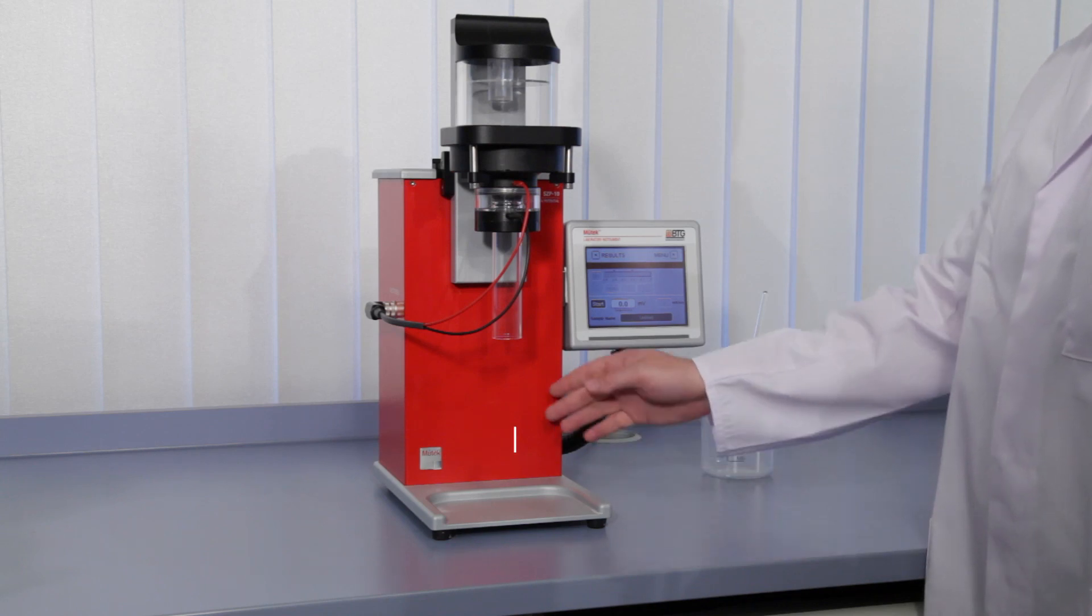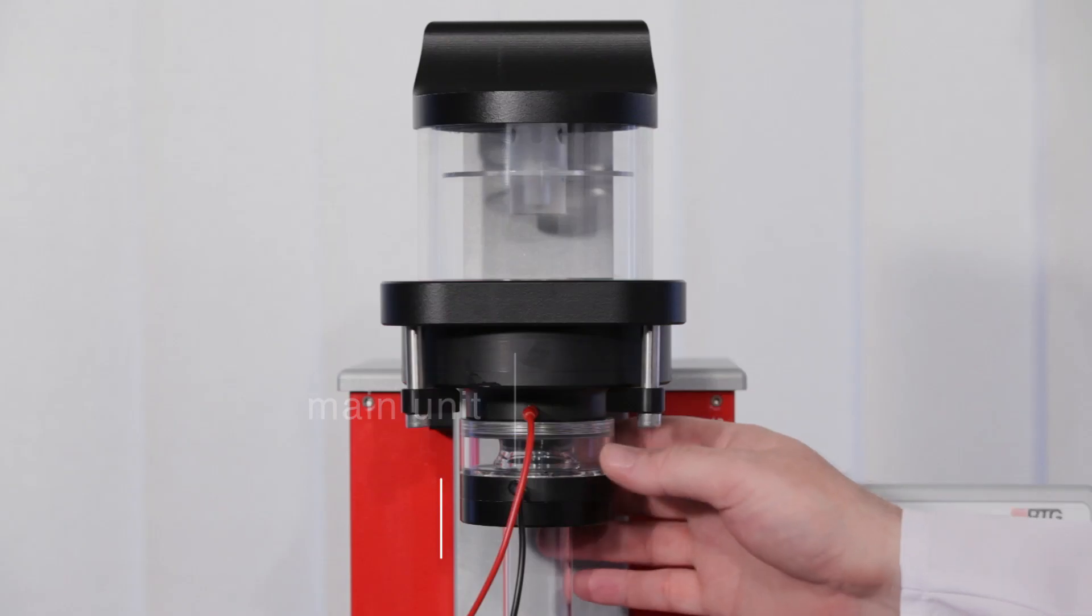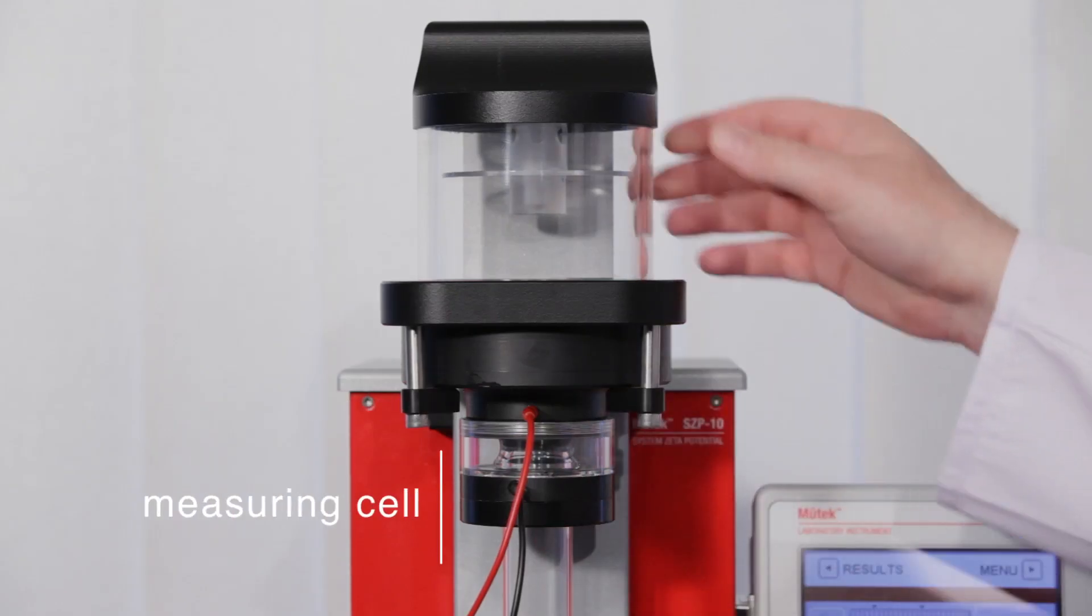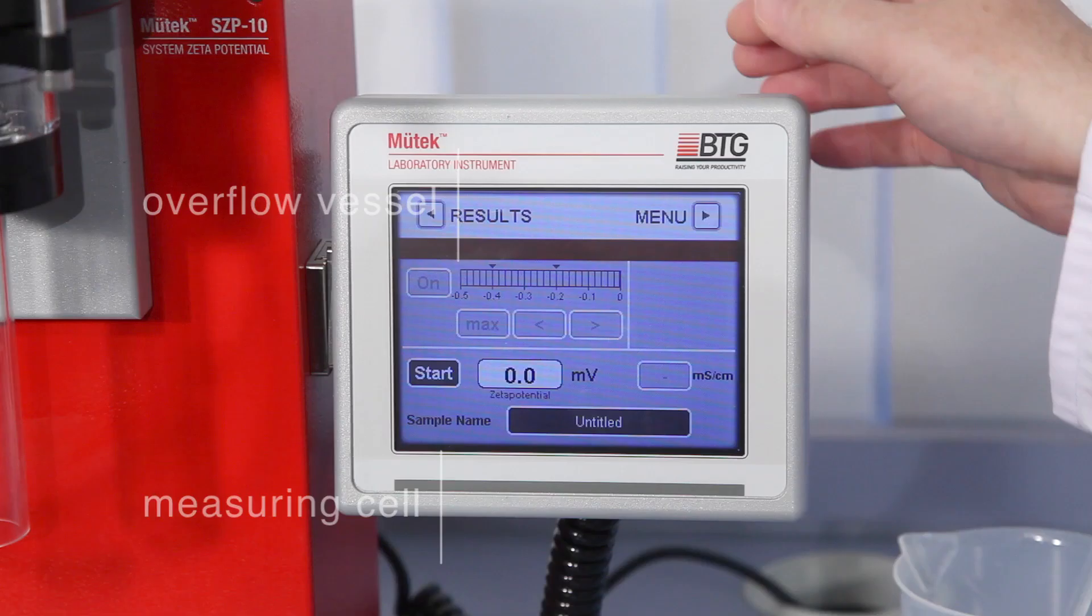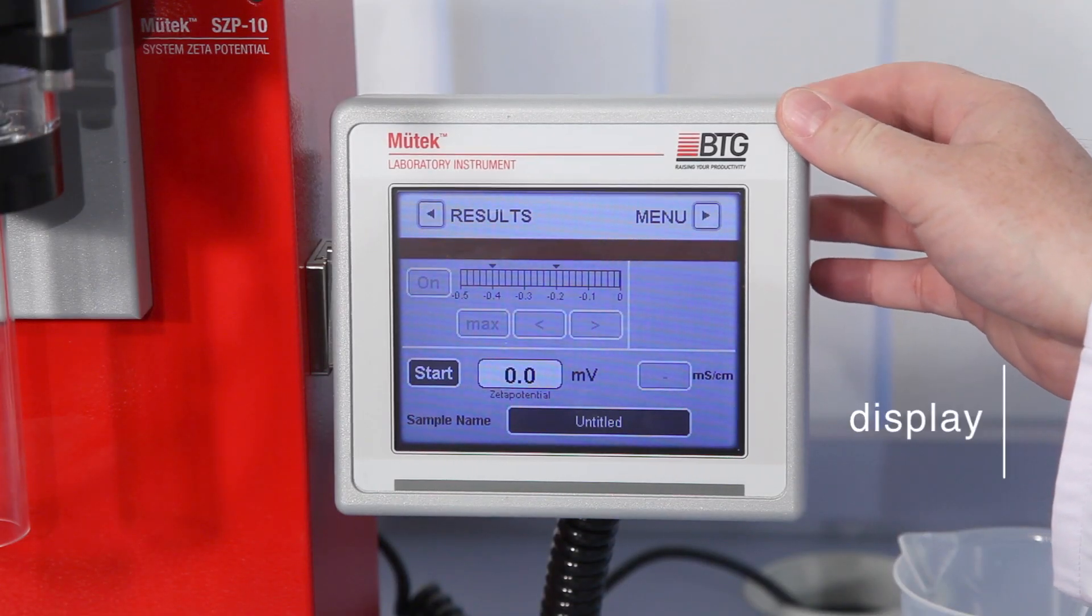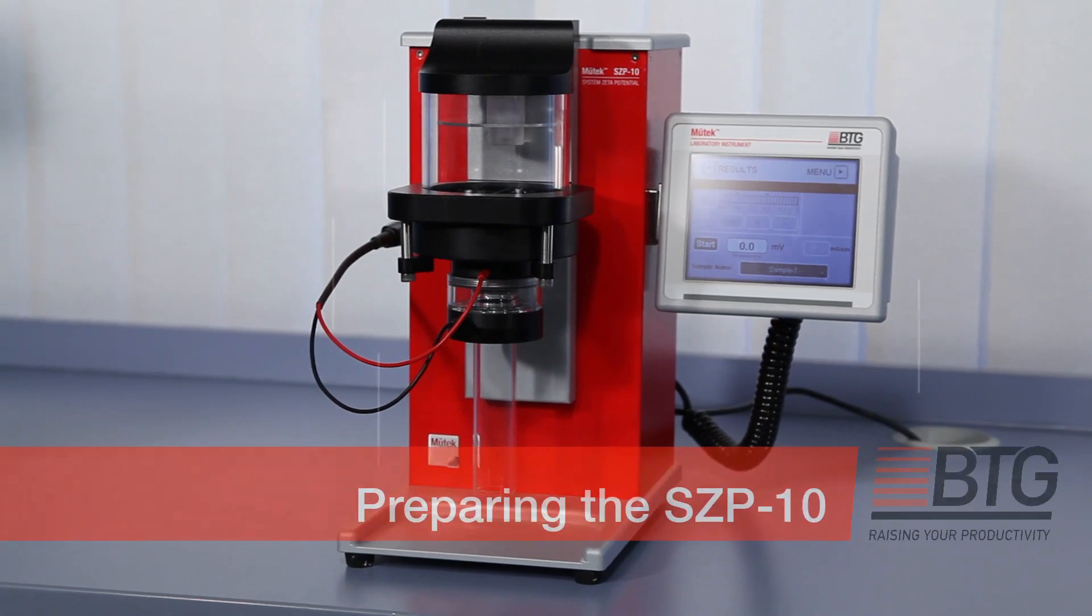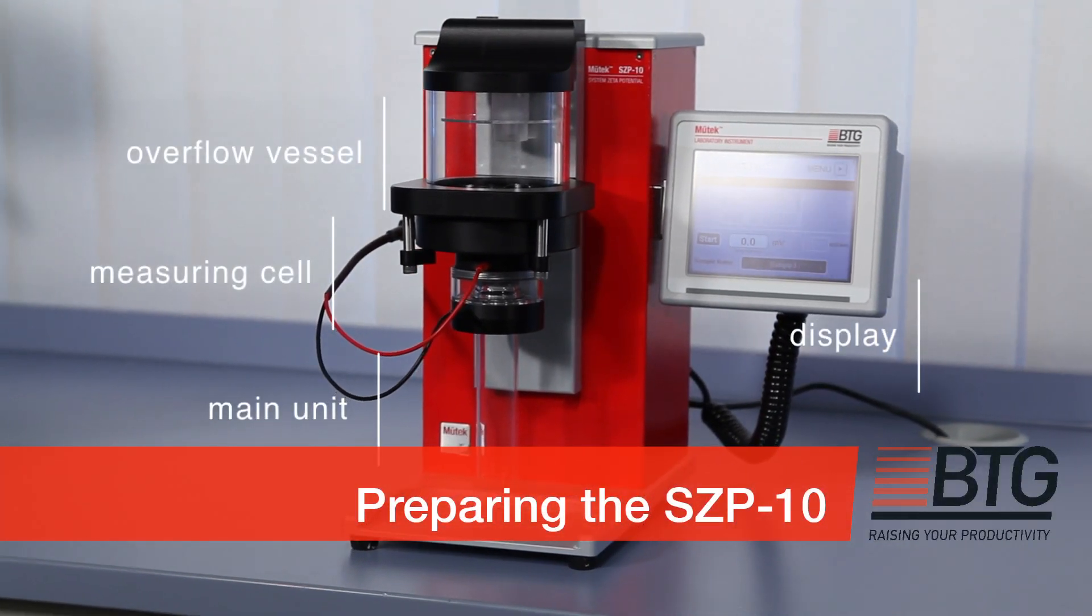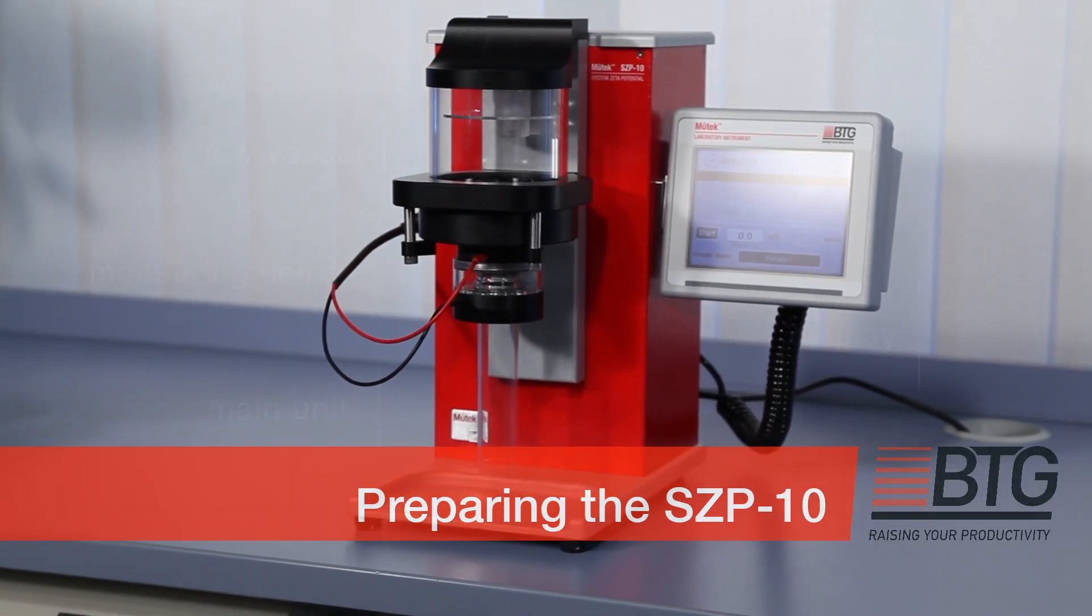The SZP consists of a main unit, the measuring cell which is attached to an overflow vessel, and a touch panel display to operate the instrument. Let's have a look and see how this instrument is used and how it works.